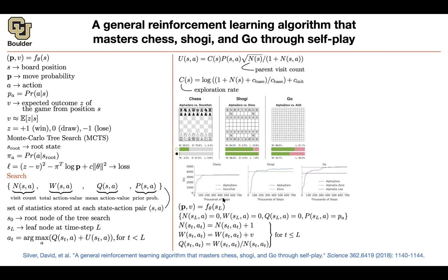Given enough training time, AlphaZero can beat the previous state-of-the-art. Stockfish beats humans, Elmo beats humans, and AlphaGo Zero also beats humans. AlphaGo Zero is the previous paper — 'zero' means zero supervision, so you're not using human data to train it. AlphaGo Lee was the first AlphaGo, which had human supervision and beat an expert at Go. AlphaZero, given enough training time, comes up with impressive strategies.